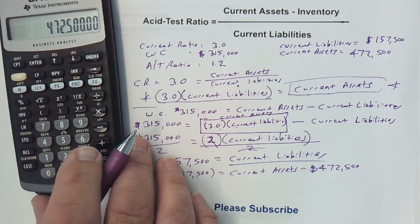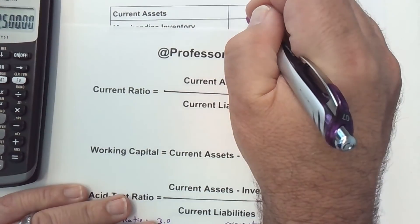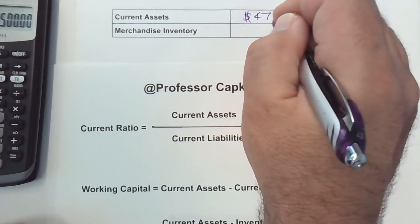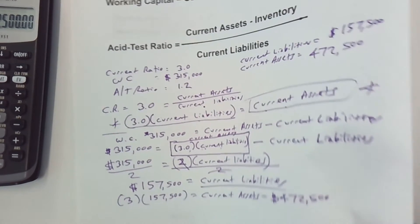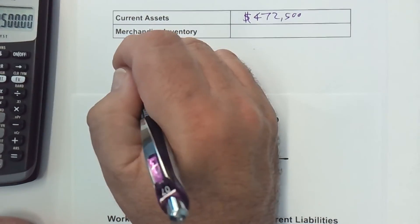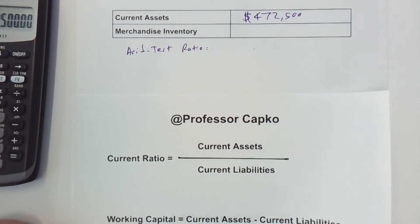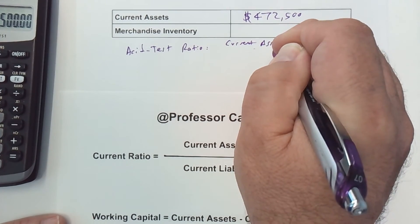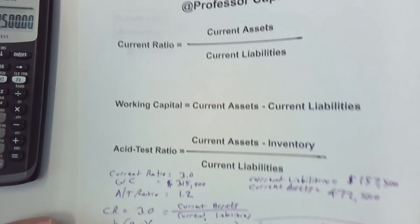We still need to find inventory. One of the things we needed to find was current assets — we just found that, at $472,500. The only thing left to find now is the merchandise inventory. We're going to do that by utilizing our acid test ratio.